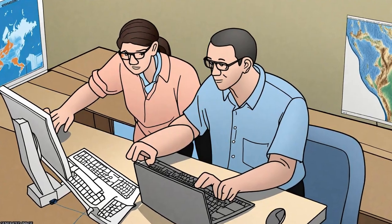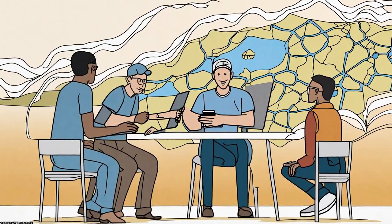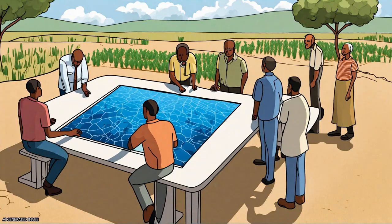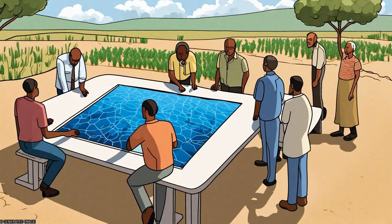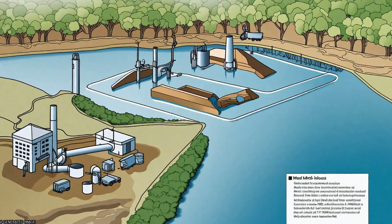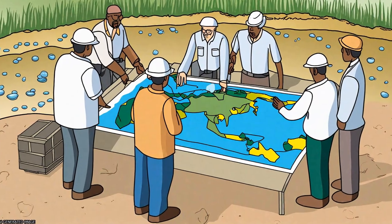They took into account the mutual feedback between supply and demand, implemented a new water allocation scheme, and included an irrigation scheme that works dynamically with surface and soil water balance.